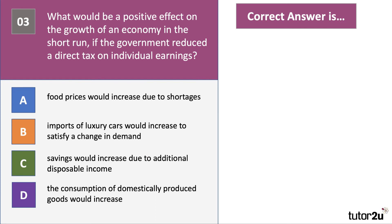Question three: what would be a positive effect on the growth of an economy in the short run if the government reduced a direct tax on people's earnings? A cut in direct tax on earnings is a cut in things like income tax or national insurance. The correct answer is D, because a fall in income tax would increase people's disposable incomes — incomes after tax — leading to an increase in consumer spending, which stimulates growth as consumption is a key part of aggregate demand.